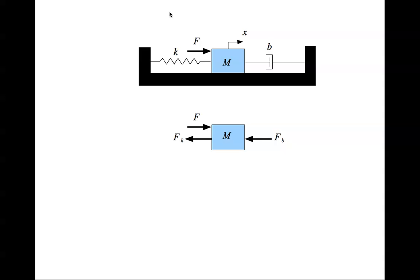You have the spring force which is again in the negative x direction. The spring here is in extension and therefore resists the motion of the mass. So Fk also is in the negative x direction.